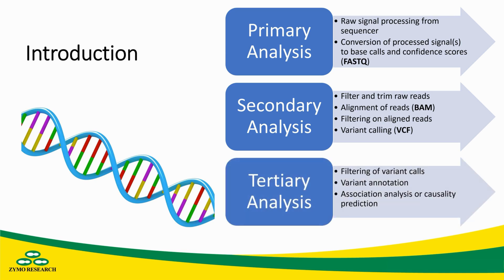This will take us into our tertiary analysis, which can involve processes such as filtering of variant calls, variant annotation to identify things such as what gene a variant is in, and association analysis or causality prediction, looking at things like the expected consequences of a variant or associations of a given variant with some condition.